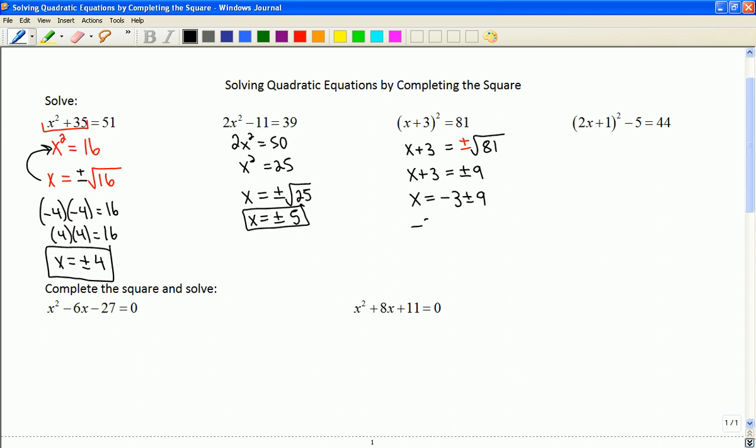So to gather my like terms, x is going to be equal to negative 3 plus or minus 9. So what would that look like? Negative 3 plus 9, that's 6. Negative 3 minus 9, that's negative 12. So x is equal to negative 12 or 6.